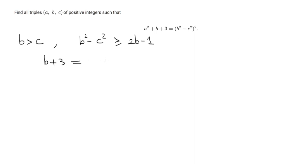So if we factorize as previously, we have b + 3 = (b² - c²)² - a², which equals (b² - c² + a)(b² - c² - a). Remind that this is a positive integer.